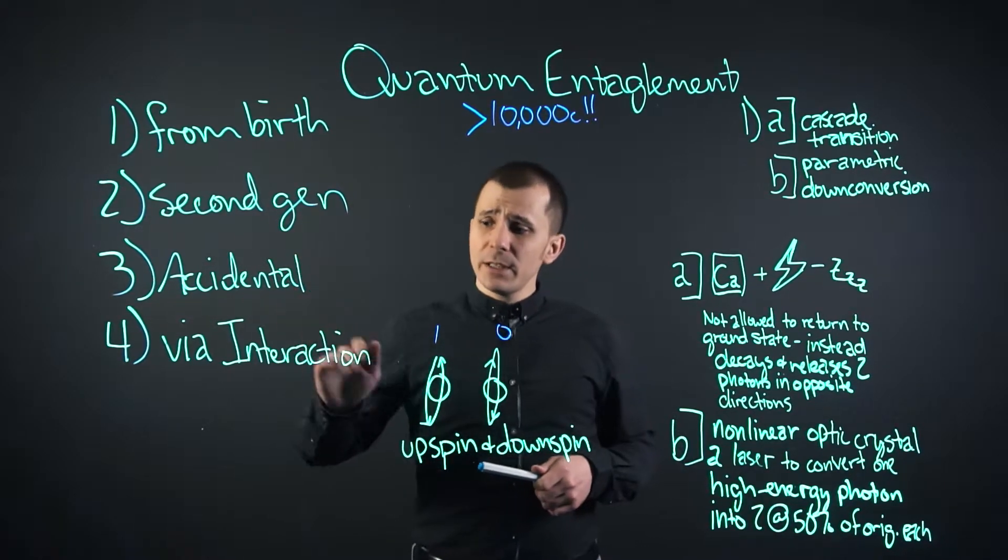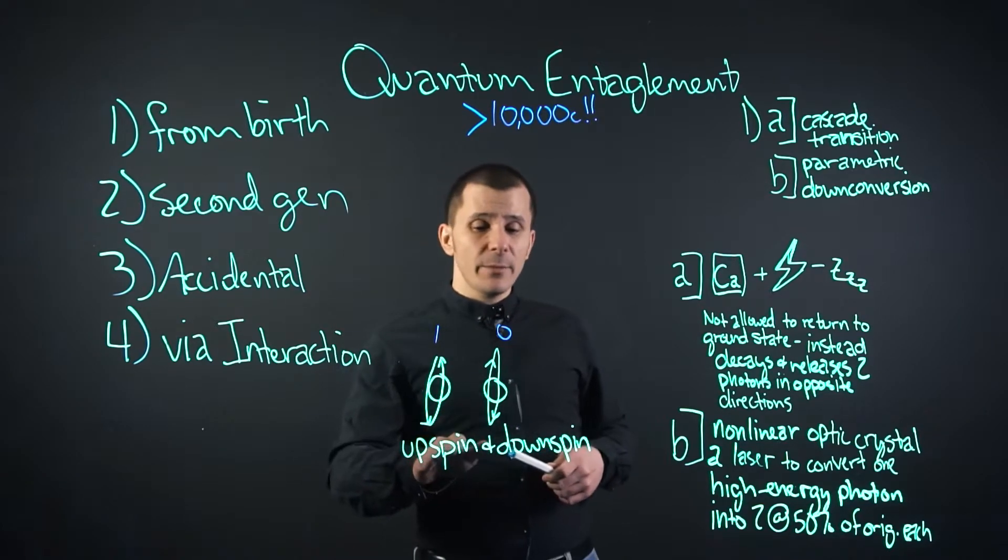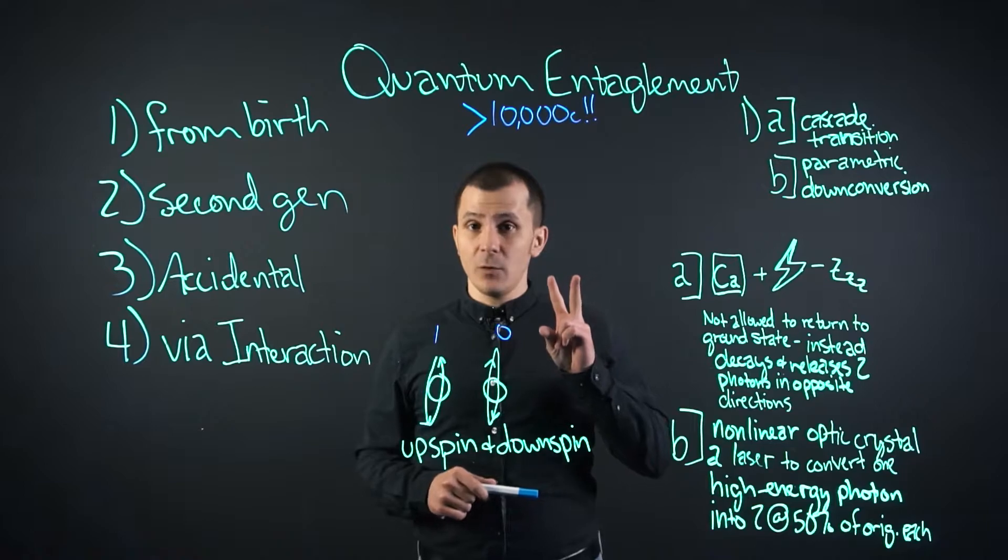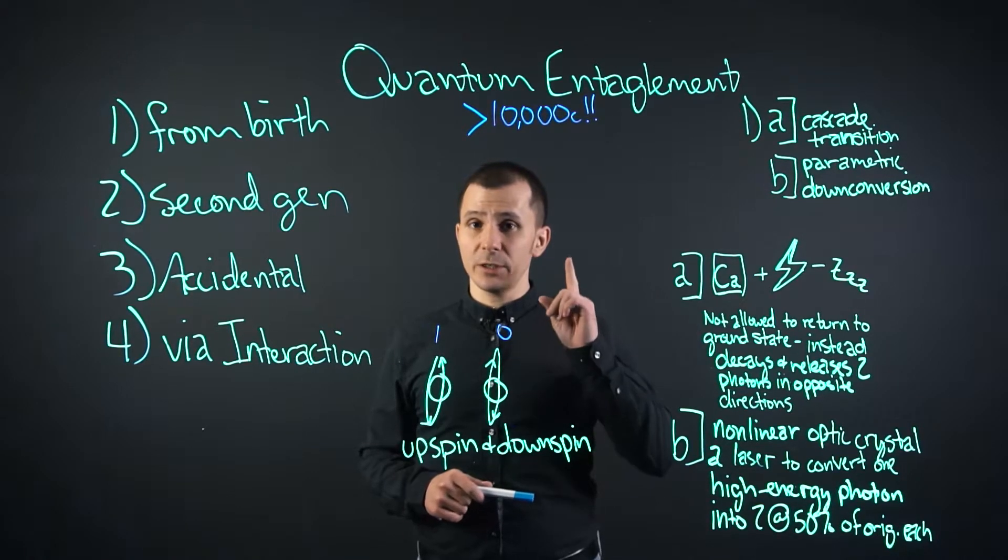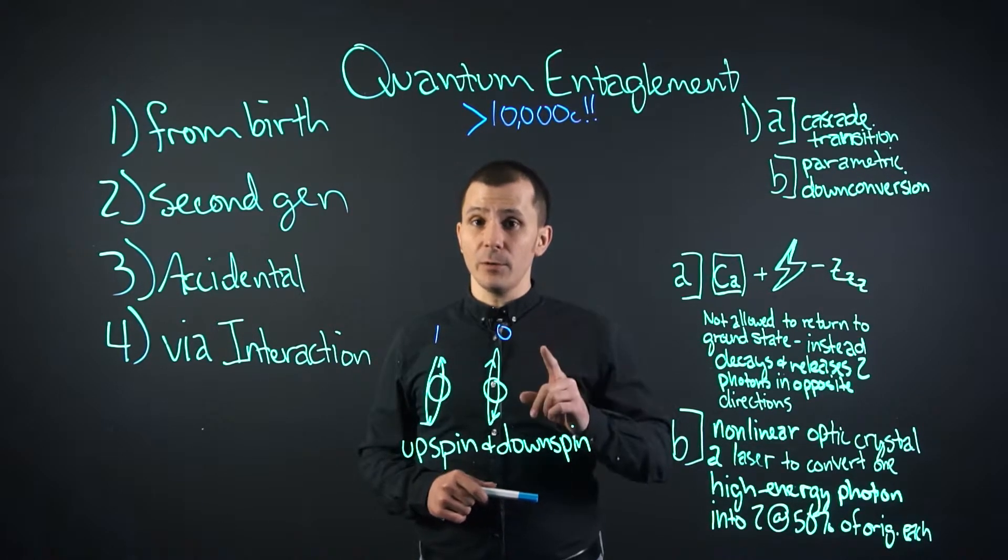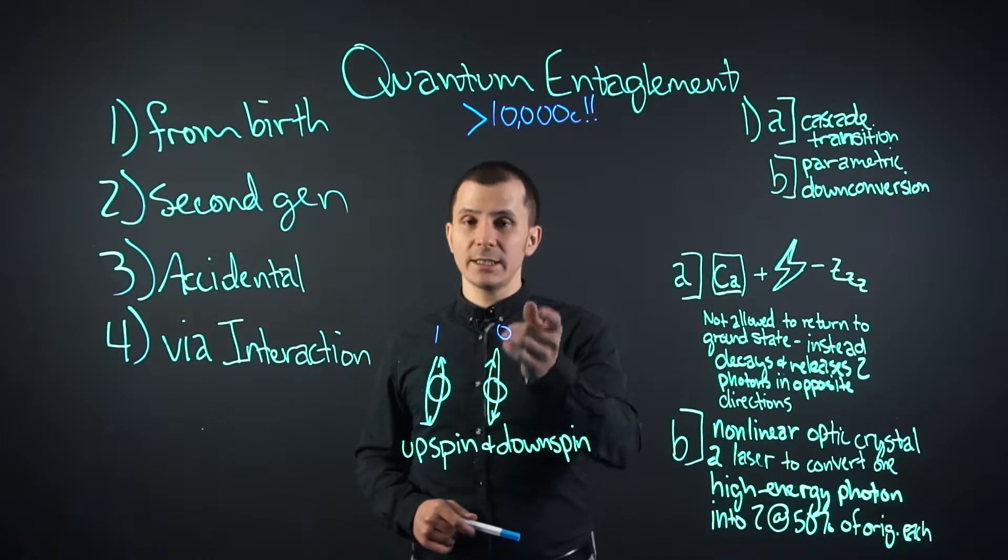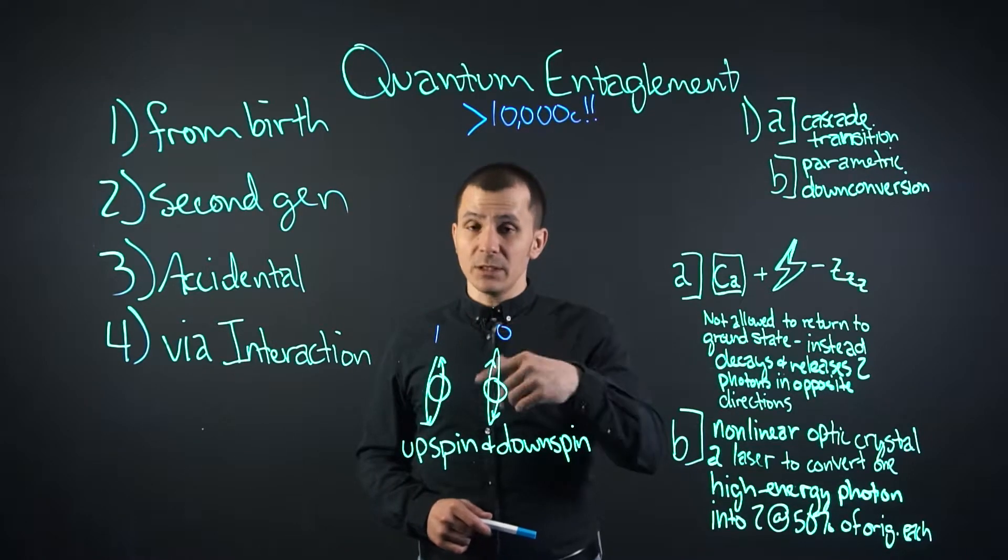Now, before we go on to accidental and via interaction, let's talk about upspin and downspin. There are two states in the quantum field or quantum fluctuation of a particle. They're either spinning up or spinning down. It's easiest to visualize the spin as an actual spin in a direction,